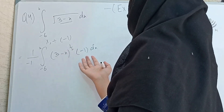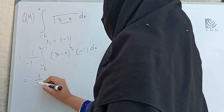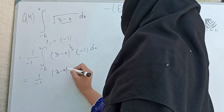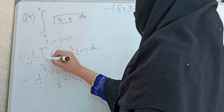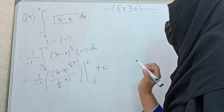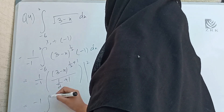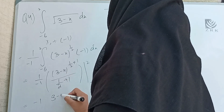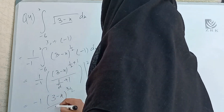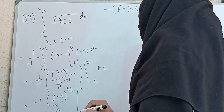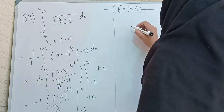Applying the power rule on (3 − x)^(1/2): power plus 1 gives 1/2 + 1 = 3/2. So the integral becomes (−1) × (3 − x)^(3/2) / (3/2) evaluated from minus 6 to 2, which simplifies to (−2/3)(3 − x)^(3/2).